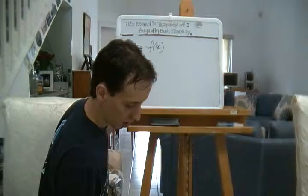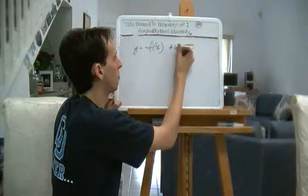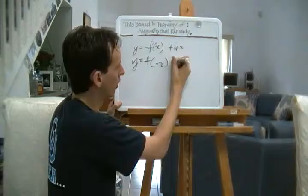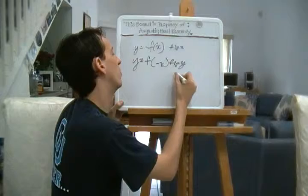Y equals negative F of X. This is pretty simple. This is flip it around the X axis. Y equals F negative X, flip Y.